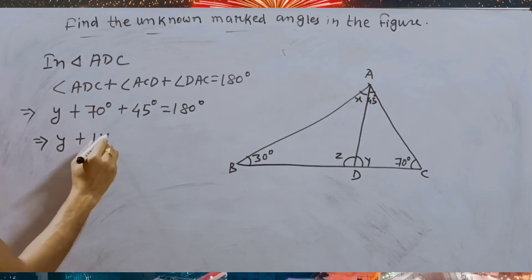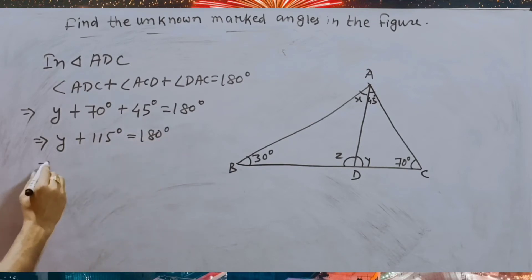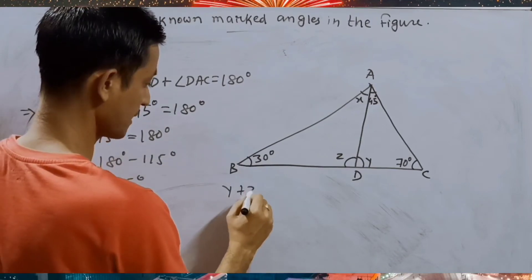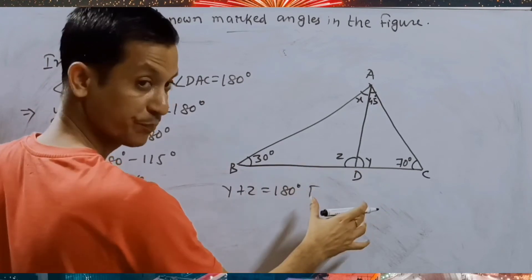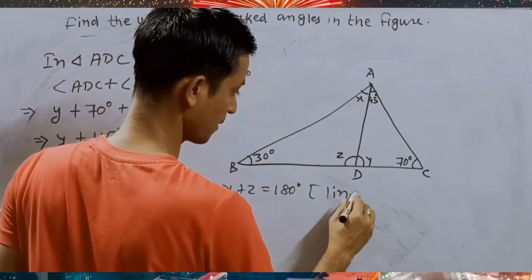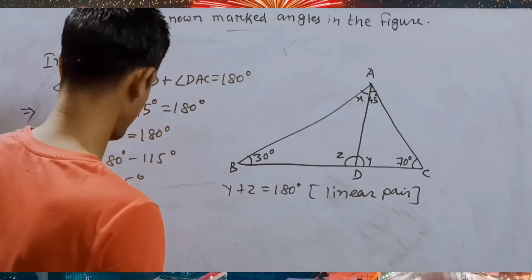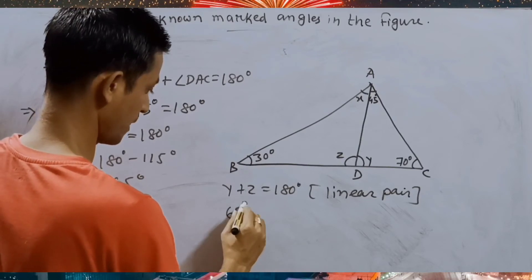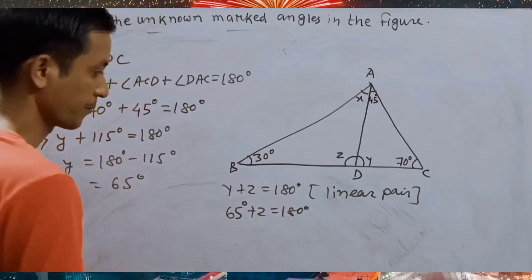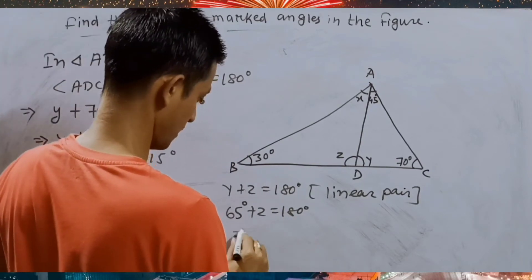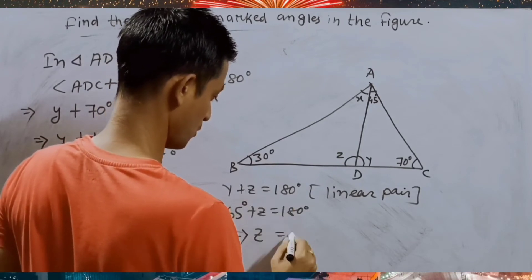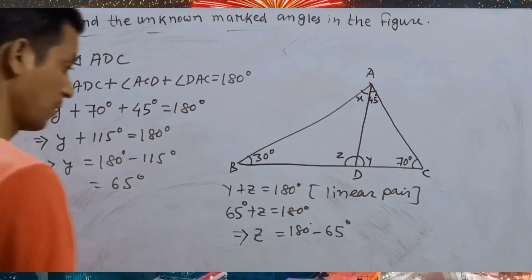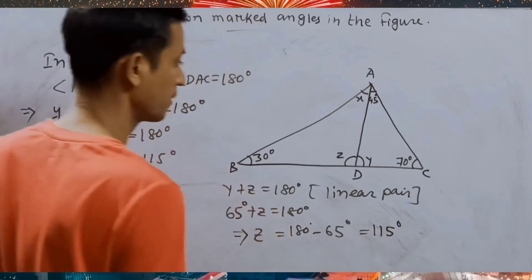Y is equal to 50 degrees... 115 degrees and 180 degrees, so Y is equal to 180 minus 115 degrees, which gives 65 degrees. Since Y plus Z equals 180 degrees on a straight line (linear pair), 65 degrees plus Z equals 180 degrees. Therefore Z is equal to 180 minus 65 degrees, which is 115 degrees.